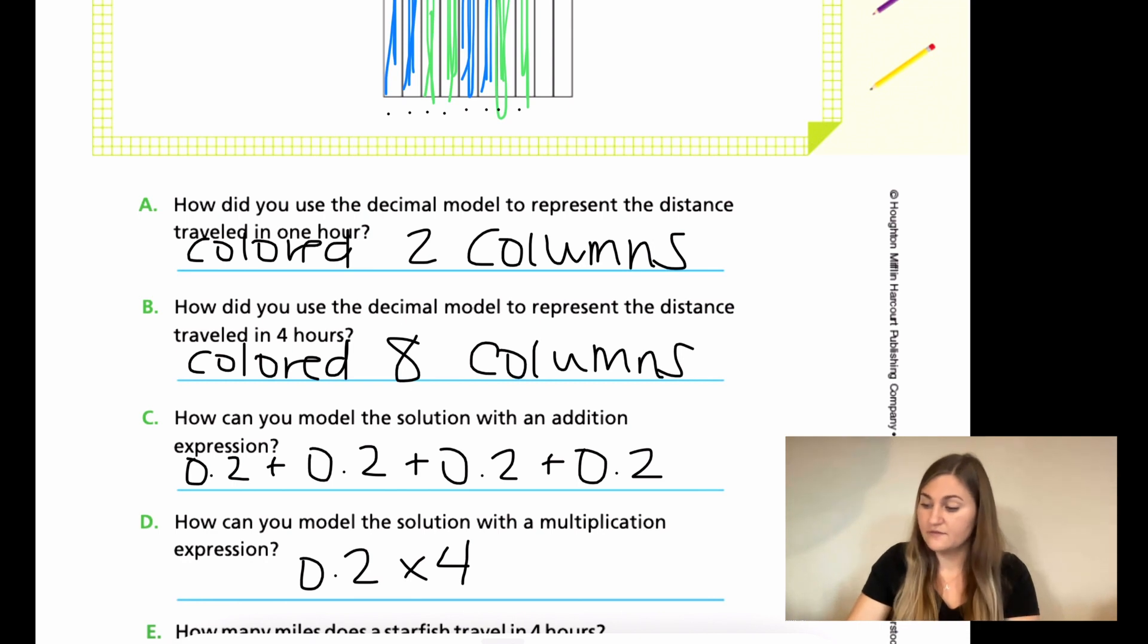Now, how many miles did the starfish travel in four hours? Well, we know because there's eight columns filled in, in the tenths place. And because we said eight columns here, we know it's going to be 0.8. And then our unit is miles. So that's our answer for E.